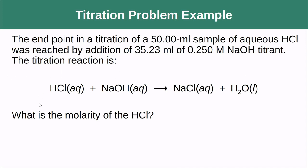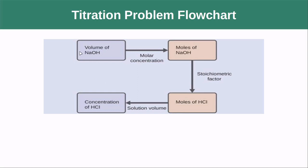The titration reaction is something we always need to know whenever we're doing this in order to perform the calculations, and we're being asked: what is the molarity of the HCl? Our flowchart is: we're going to go from the volume of our titrant, sodium hydroxide, that we added, use its molar concentration to figure out the moles of NaOH, multiply by the appropriate stoichiometric factor to get to the moles of HCl, then use the solution volume to figure out the concentration of HCl.